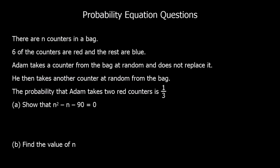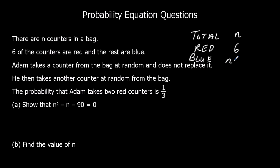Here's a different question. This time there are n counters in the bag in total: 6 are red, and the rest are blue, so blue = n − 6. Adam takes a counter at random and does not replace it, then takes another. The probability he takes 2 red counters is 1/3. We need to show that n² − n − 90 = 0.